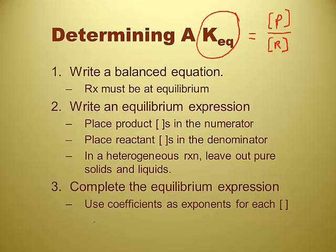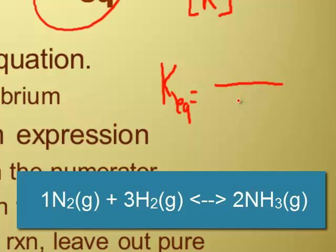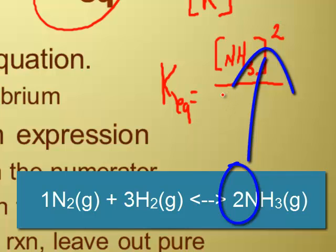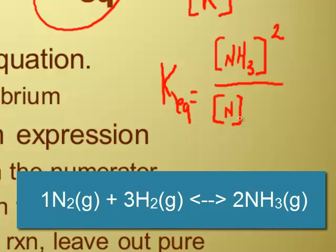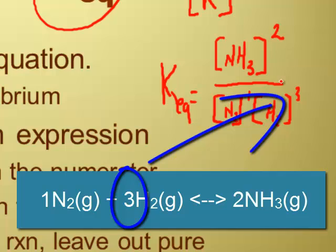Complete the equilibrium expression by using coefficients from the balanced equation as exponents for each concentration. For instance, using the Haber process — nitrogen gas and hydrogen gas creating ammonia gas — the balanced equation is homogeneous since they're all gases. So when I write my KEQ, products go first: concentration of NH₃ squared, divided by concentration of N₂ raised to the first power times concentration of H₂ raised to the third power. That is the equilibrium expression.